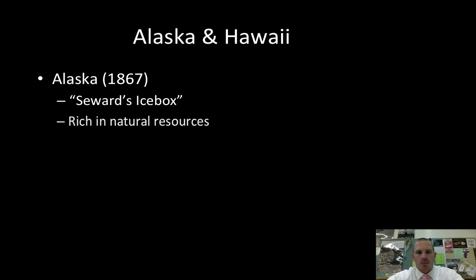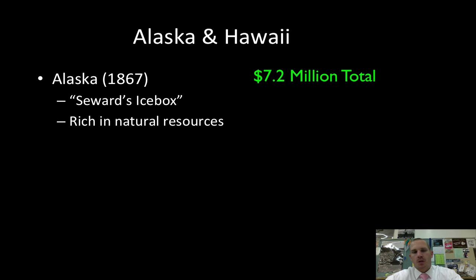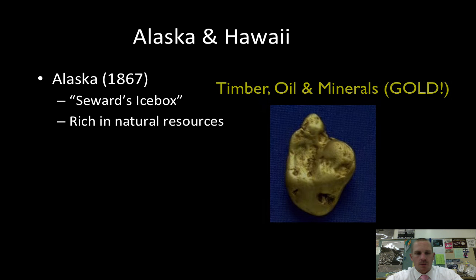Alaska is really the first major purchase, in 1867, by our Secretary of State William Seward. He's going to be made fun of for following through with this purchase. It ends up costing the United States about two cents an acre. The joke's on everybody else because Alaska is extremely rich in natural resources — it's kind of the new final frontier.